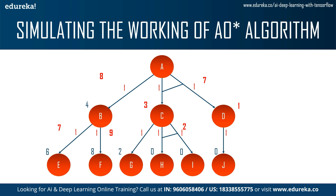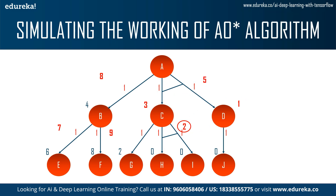Calculating back is a bit tricky since C and D must be solved together. First, compare the costs for C: 3 versus 2 — two is lower, so we take 2. Then add D's cost of 1, plus the edge costs from A to C and A to D (1 each): 2 + 1 + 1 + 1 = 5. So the 7 is replaced by 5. Comparing again: A to B is 8, A to C and D is 5 — five is lower. This is how AO star algorithm traverses a problem and finds a solution.